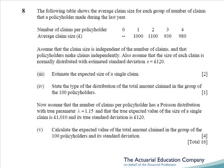The next part of the question tells us the average claim size for each group based on the number of claims a policyholder made, and we're asked to estimate the expected size of a single claim. In the bar chart, 40 people made no claims (total claim amount of zero), 25 people made one claim with an average size of £1,000, and 20 people made two claims averaging £1,100 each. Multiplying those out gives the total claim amount for each group, and once you've got the total amount you divide by the number of claims to give the average claim size.